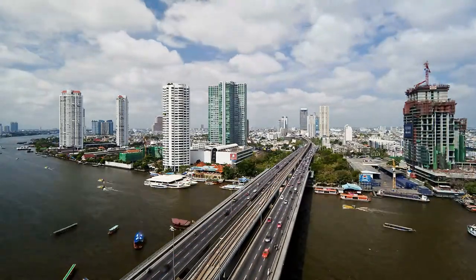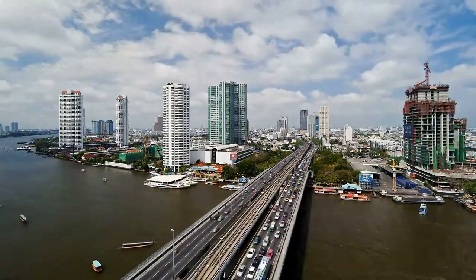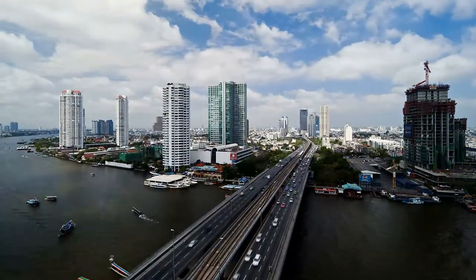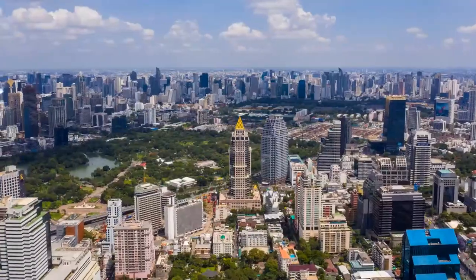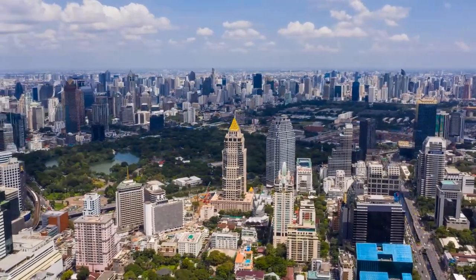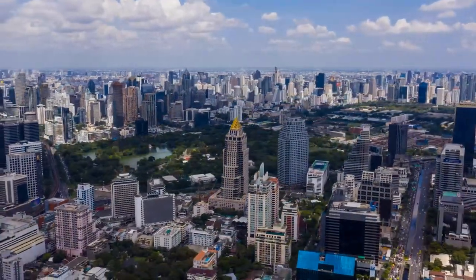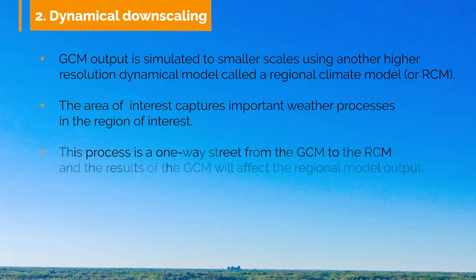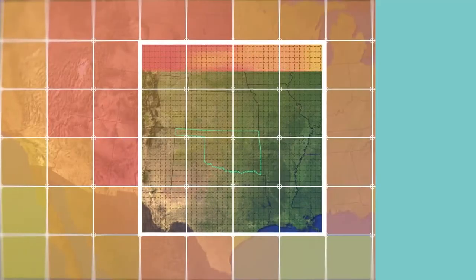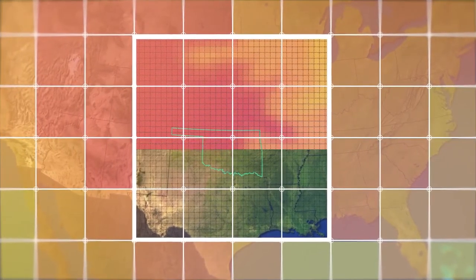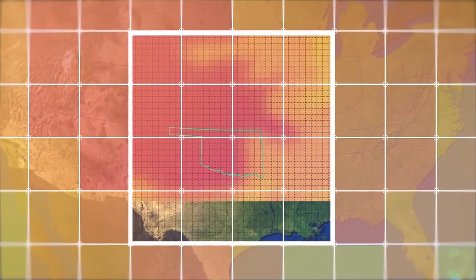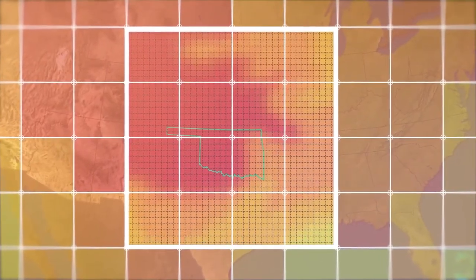For example, if you are interested in the future climate of Bangkok, you might choose a regional model domain which also encompasses other provinces connected with Bangkok. The RCM output is further analyzed for information about climate change within the region of interest. This process of dynamical downscaling is a one-way street from the GCM to the RCM — the results of the GCM directly affect the regional model output, but the regional model does not impact the global model.